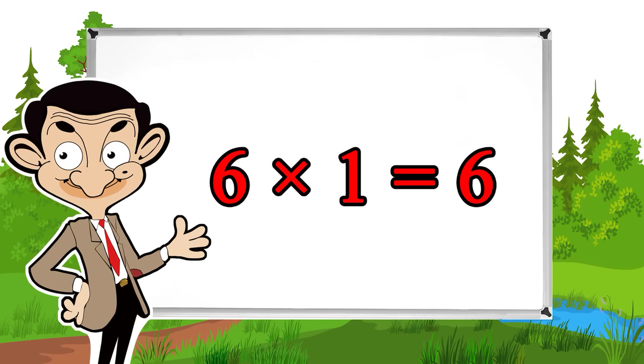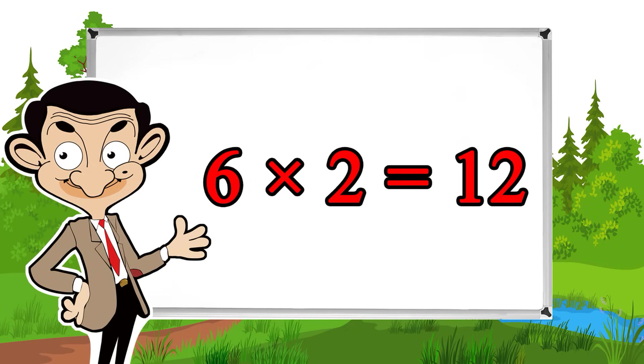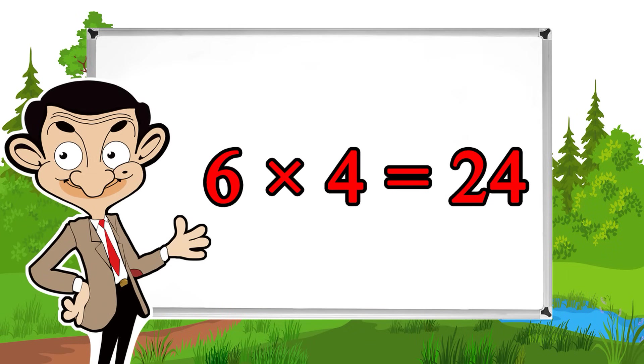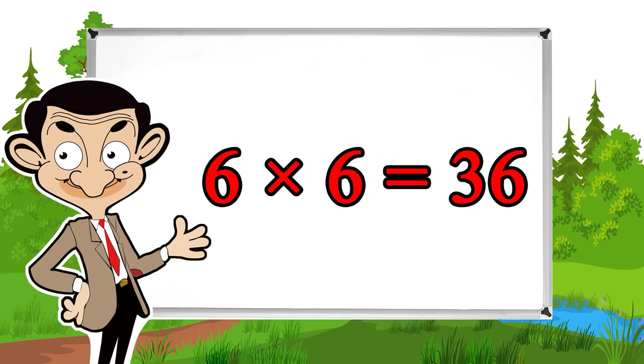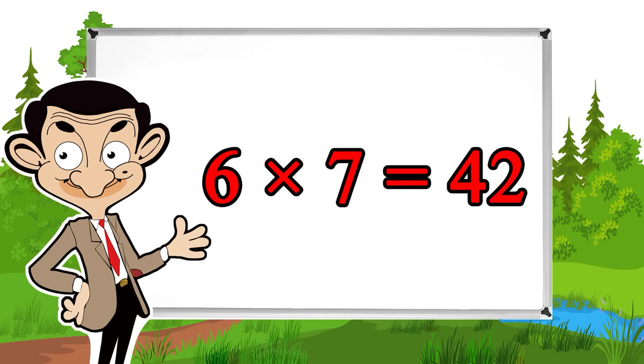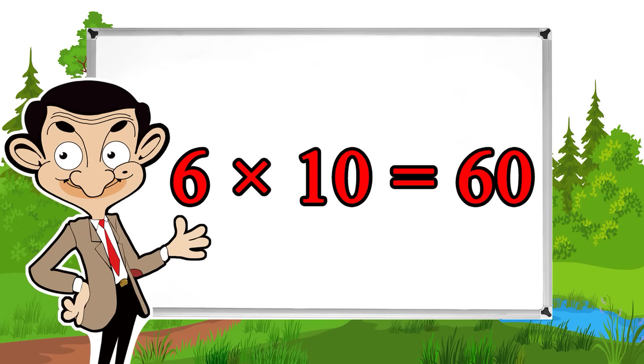6 times 1 equals 6, 6 times 2 equals 12, 6 times 3 equals 18, 6 times 4 equals 24, 6 times 5 equals 30, 6 times 6 equals 36, 6 times 7 equals 42, 6 times 8 equals 48, 6 times 9 equals 54, 6 times 10 equals 60.